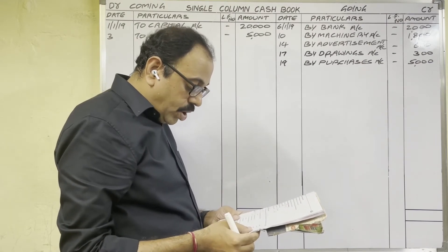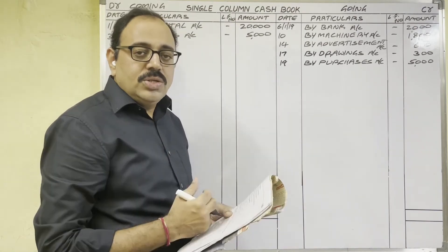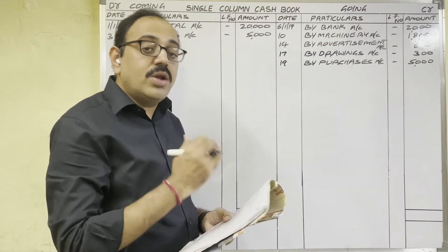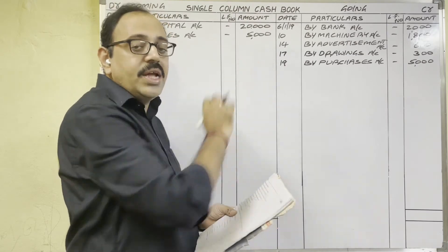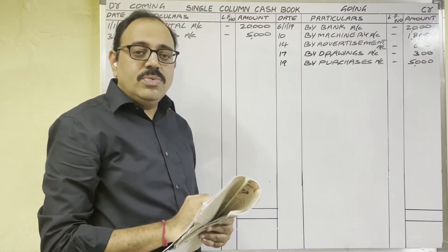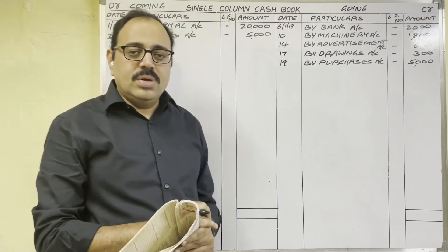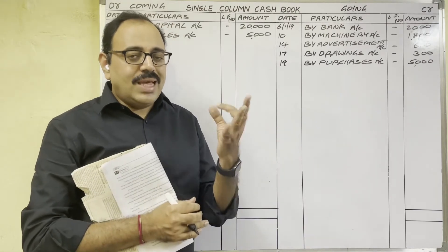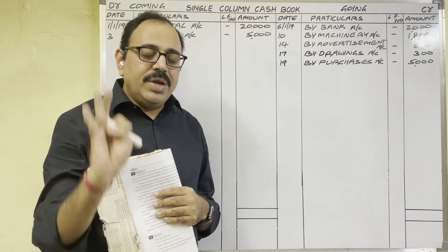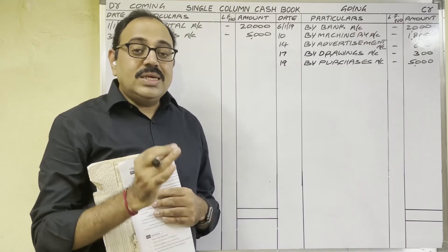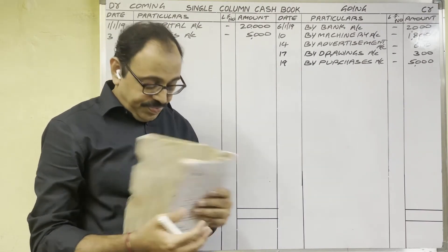21st January: sold goods to a customer on credit, 3,000 rupees. We sold goods but cash is not coming to us, so cash is neither coming nor going. Therefore we need not write this transaction in the cash book. There are eight subsidiary books in total; this is a credit sale transaction and it will be recorded in the sales book, not in the cash book. So ignore this entry.